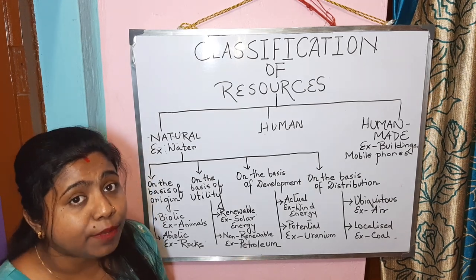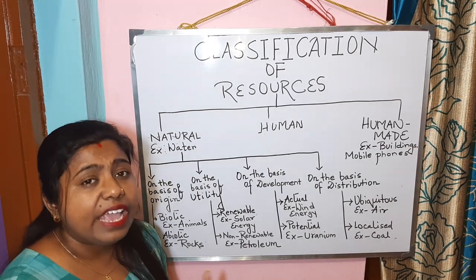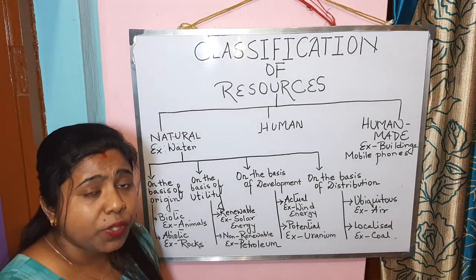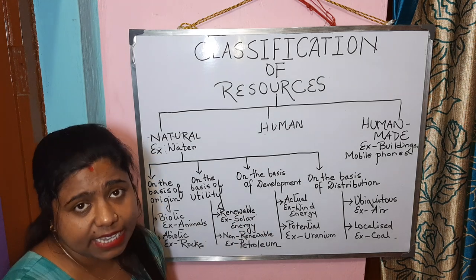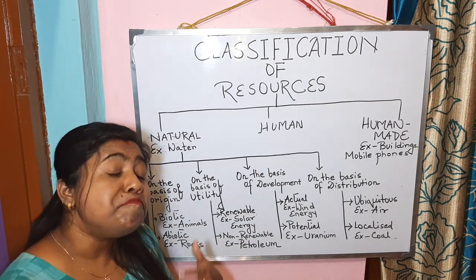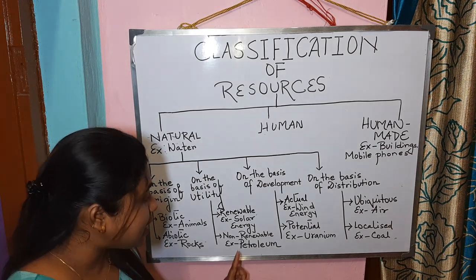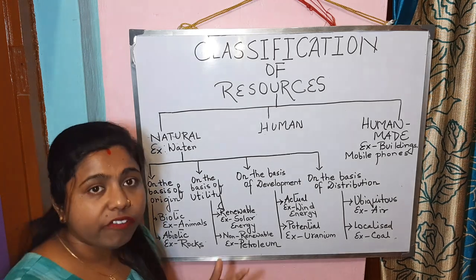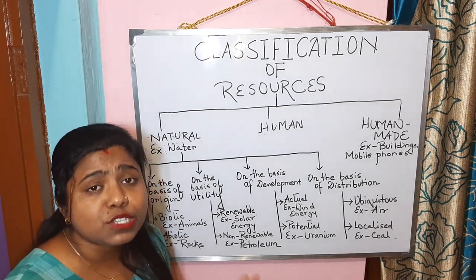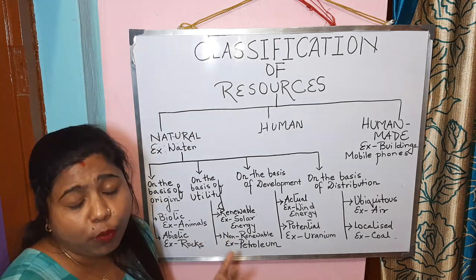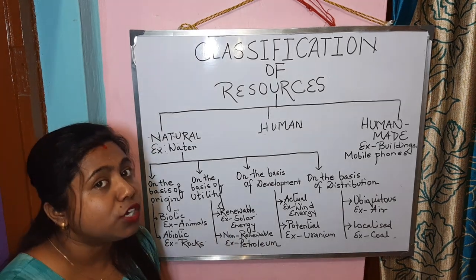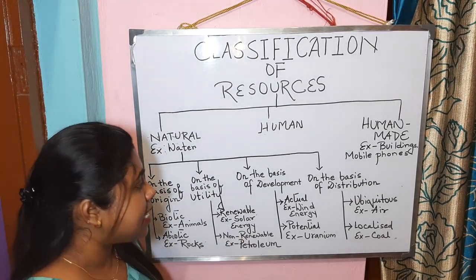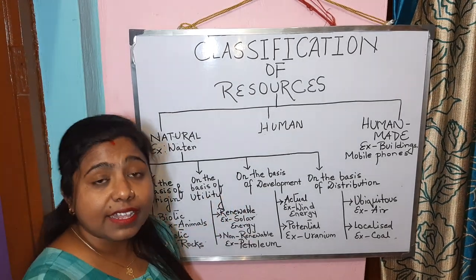Non-renewable resources are not available in abundance; rather, they are available in very limited stock. Once they are over-utilized and get depleted, it will take millions of years to form back again, so they are called exhaustible resources. For example, petroleum takes millions of years to form, and since we are over-utilizing it, we need to control its use so that this resource does not get depleted.